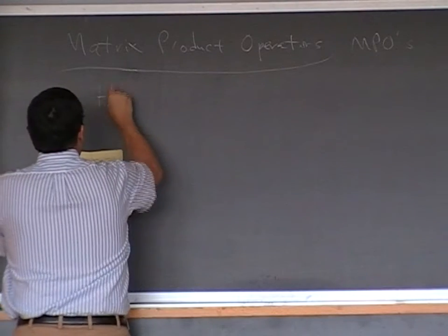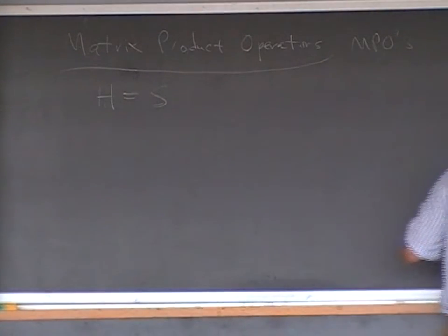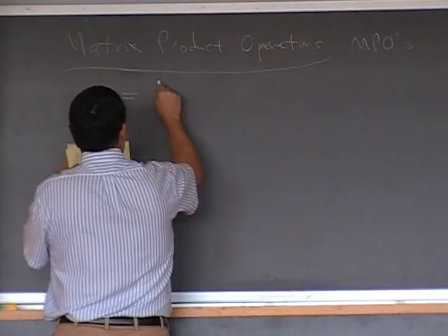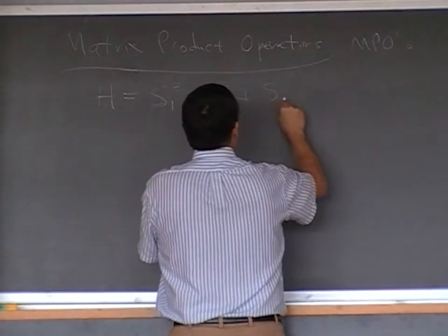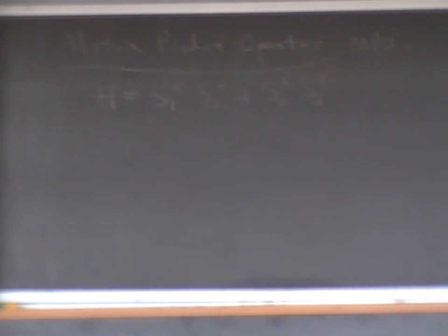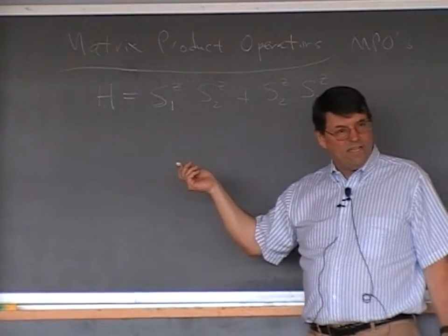Let me do a simple MPO example. Take the Ising Hamiltonian with just the classical terms: H = S1z·S2z + S2z·S3z on three sites. To write the matrix product operator, note that when I write a term like S1z·S2z, in the full three-site space that's S1z ⊗ S2z ⊗ 1. We don't usually write the identity, but for understanding the MPO structure it should be there.